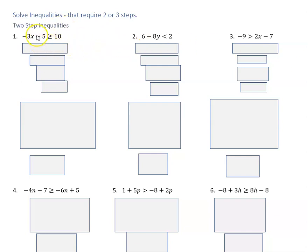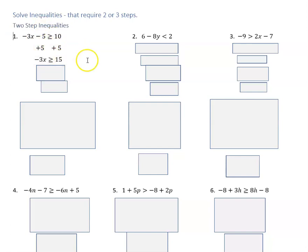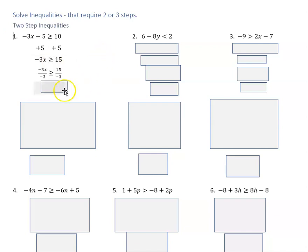When you see an inequality like this and we want to isolate the X, the first thing I would do is add five to both sides. When you add five here it becomes zero, and ten plus five is fifteen, so that gives us negative three X is greater than or equal to fifteen. Then we divide both sides by the coefficient, which is negative three, giving us X is less than or equal to negative five. Remember when you divide by a negative you have to reverse the direction of the arrow — that's why we switch to less than. Fifteen divided by negative three is negative five.